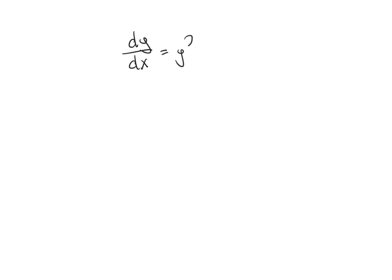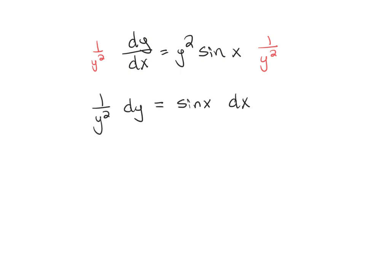Example 3: dy over dx equals y squared times sine x. To move the y squared to the left, multiply by 1 over y squared, then multiply both sides by dx. So 1 over y squared dy equals sine x dx. Taking the integral of both sides — remember, 1 over y squared is y to the negative 2 — this gives y to the negative 1 over negative 1 equals negative cosine of x plus c.